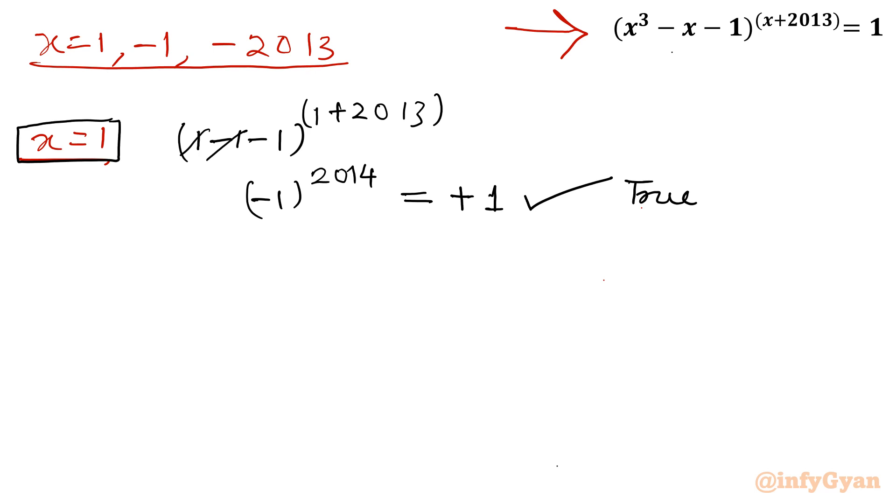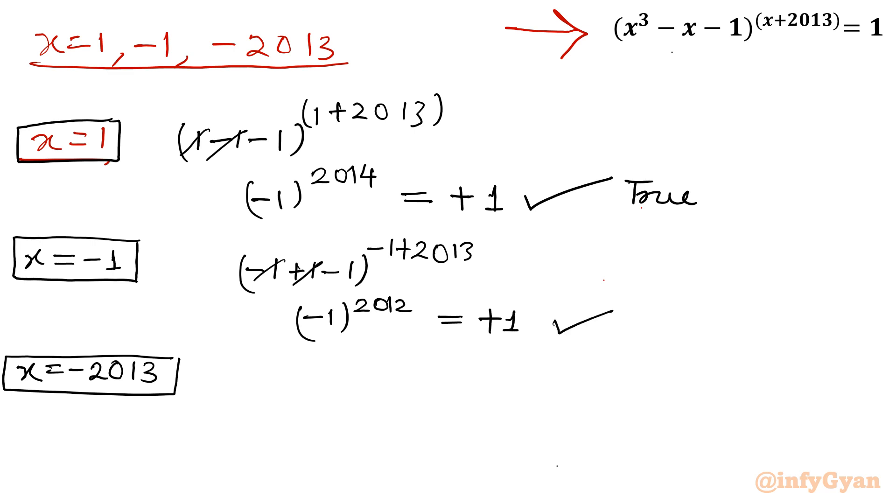Now let us check for minus 1. So I will write there minus 1 cube minus 1, plus 1, minus 1, whole power is minus 1 plus 2013. Which will give us negative 1 plus 2012. Again power is even. So it will come out plus 1, which is true. RHS is plus 1. So this one is also accepted.